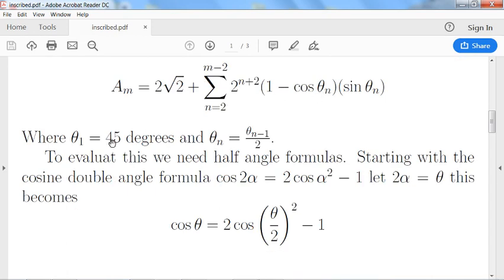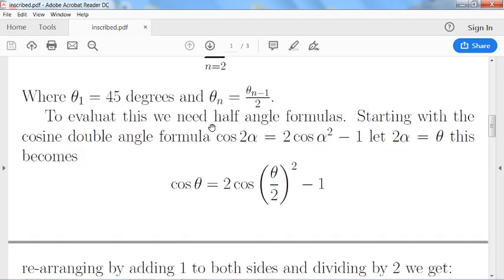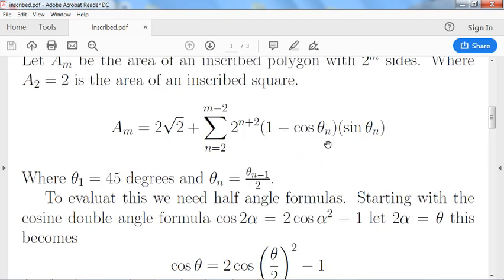Where we've defined theta 1 to be 45 degrees or π over 4 radians, and then theta n is defined recursively from theta n minus 1 over 2. And to evaluate the sines and cosines here we need some formula for the values.